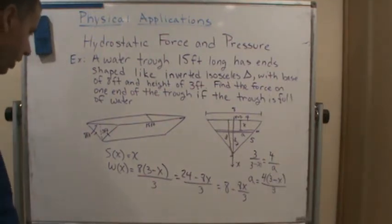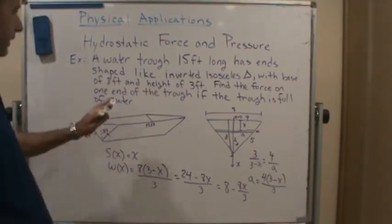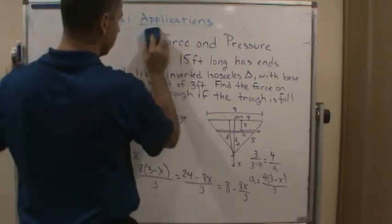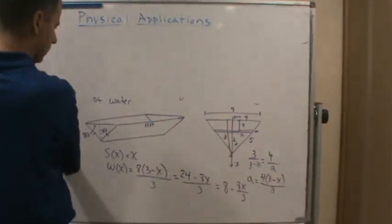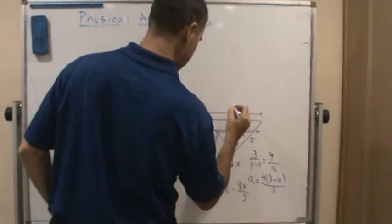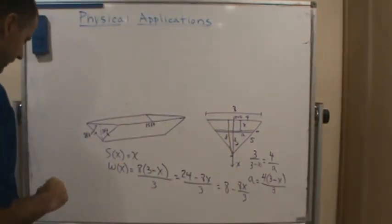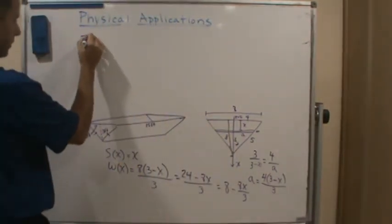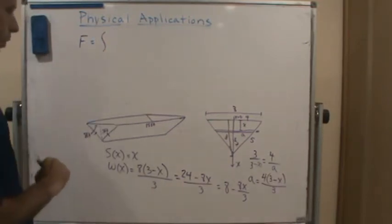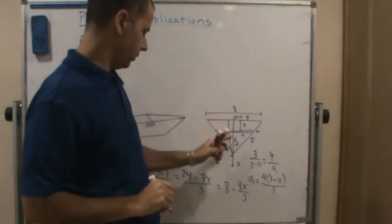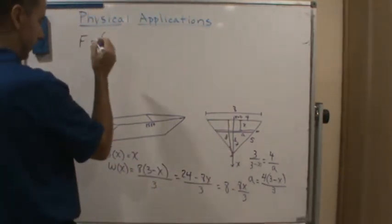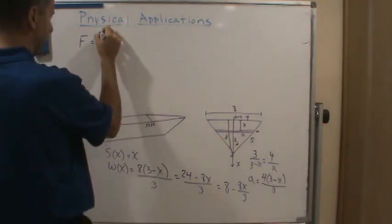So now all we have to do is put it together with the density of water, right? So now let's go up here and put it together. So the force is going to be from what to what? So we're going from 0 to 3, not 8. So we're going from 0 to 3, right?